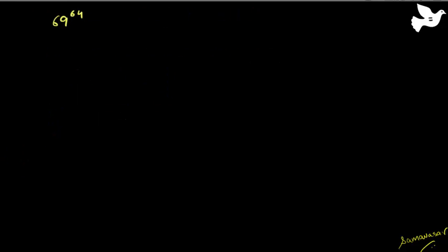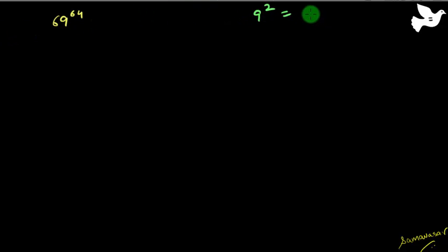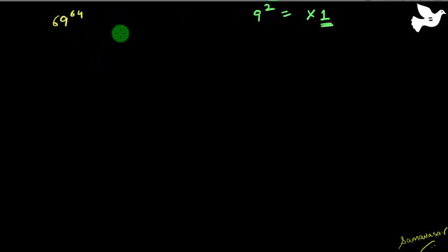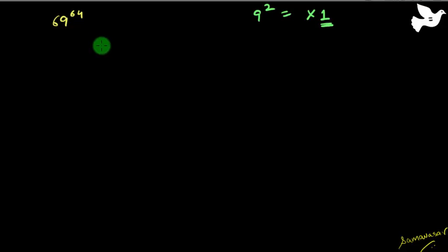So how do we use this? Let's say I am trying to find out 69 raised to the power 64. In the case of 9, first remember that 9 squared gives a number ending in 1. Now, 69 raised to the power 64 — I can write this as 69 raised to the power 2, the whole thing raised to the power 32. That is how we can write 64.